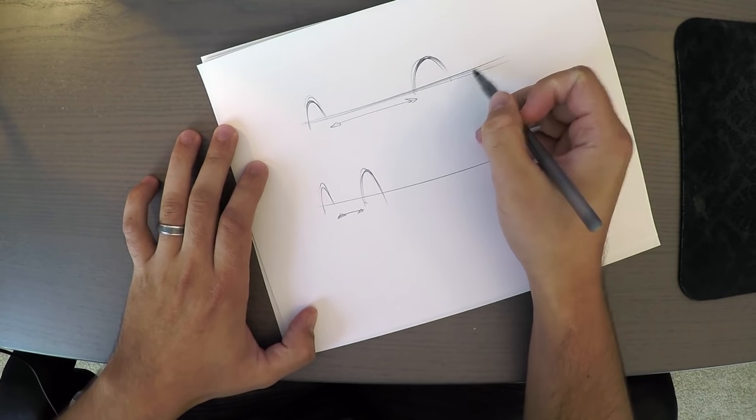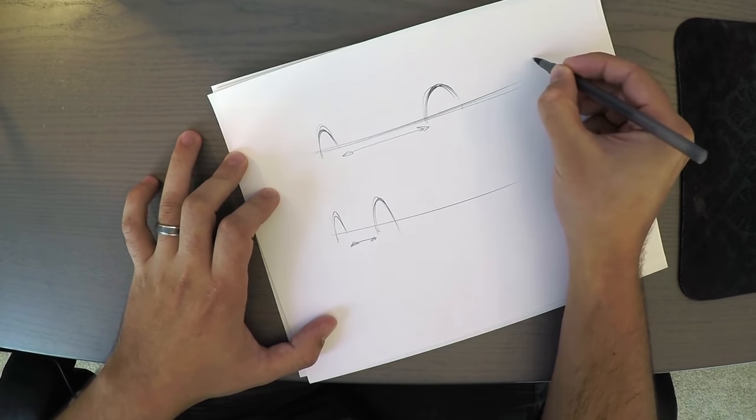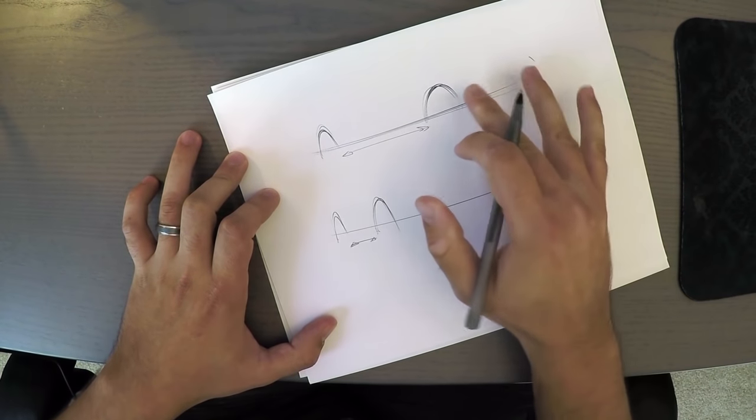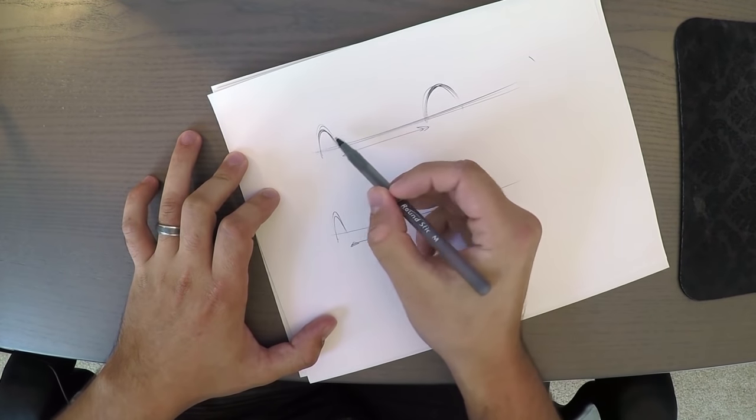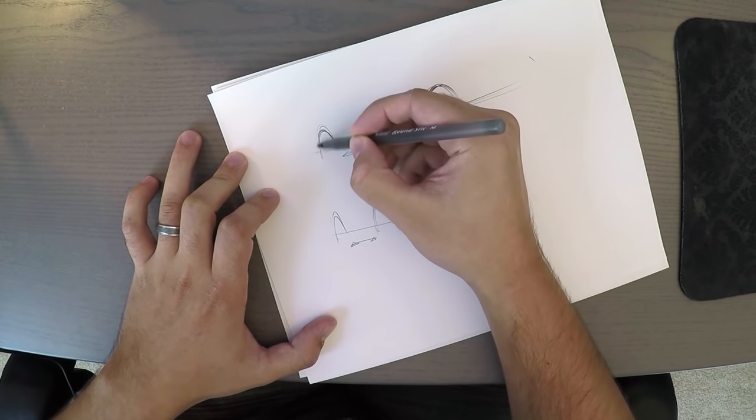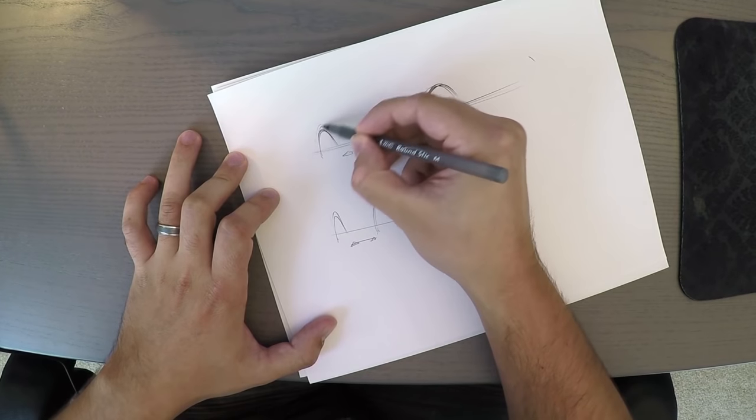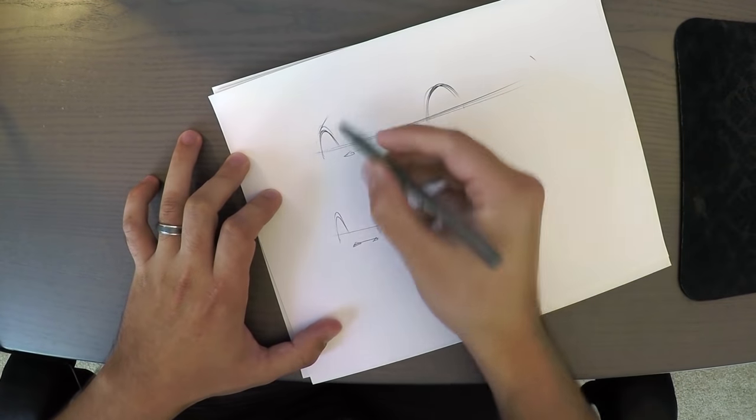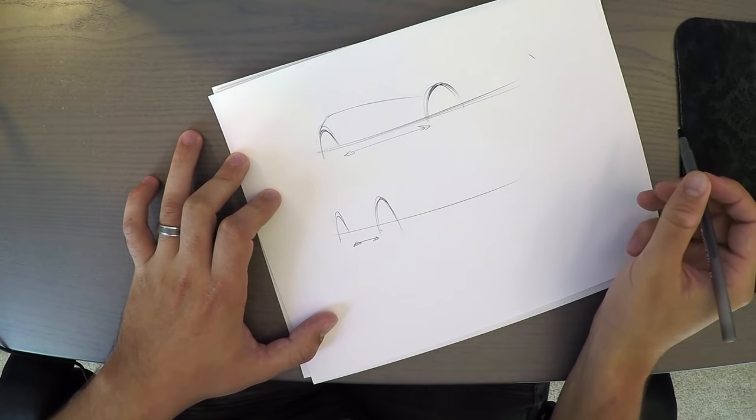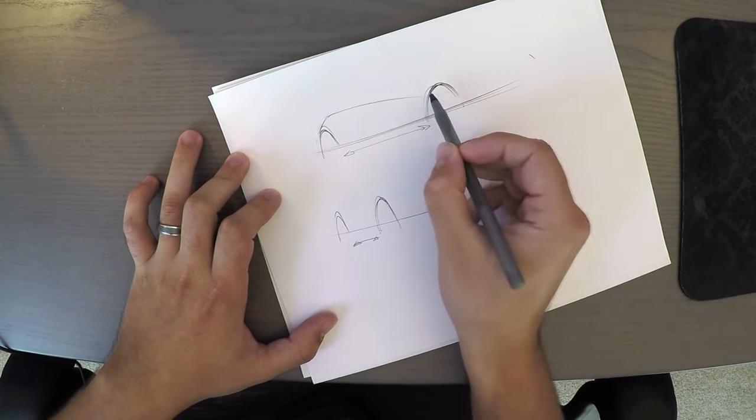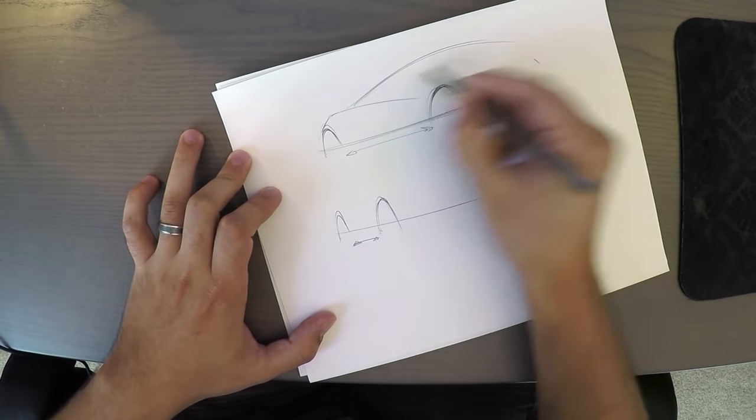The next thing we might want to do is to add an end point where this car is going to end. We're starting to define the proportions of the car now. The same goes for the hood. Since we're looking at it from a slight rear view, chances are we're not going to see a lot of bodywork sticking out in front of this wheel. I want to show you kind of like a template.